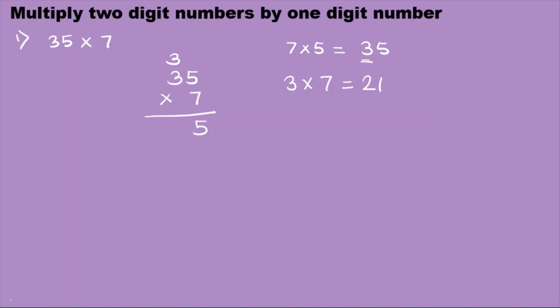Now I start with 3 times 7, and 3 times 7 equals 21. We can't write 21 down here because we have to add the carried 3 to 21. So 21 plus 3 equals 24. We write 24 down here. When we multiply 35 by 7, the product is 245.